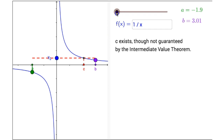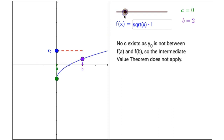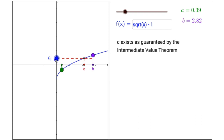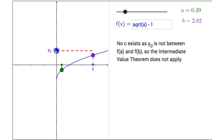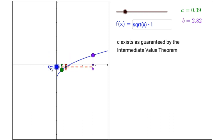If we click on the slider and slide it to the right, this is our second preset function: f of x equals the square root of x minus 1. I can adjust the endpoints of my desired interval, and if I drag y sub 0 so that it is between F of a and F of b, the Intermediate Value Theorem applies and there is an x equal to c which is guaranteed to exist. But once I am outside of the interval, the Intermediate Value Theorem no longer applies.